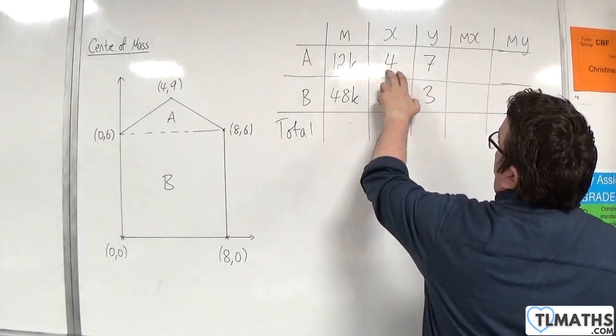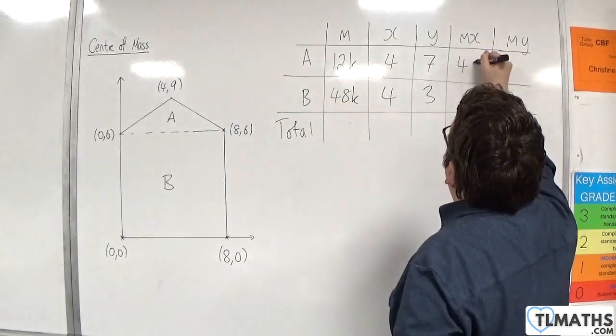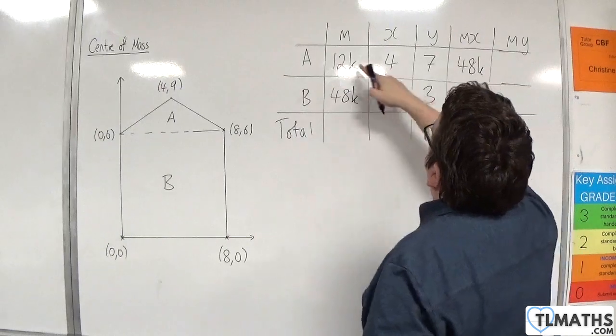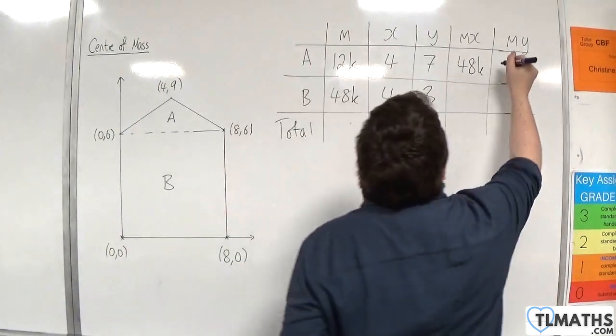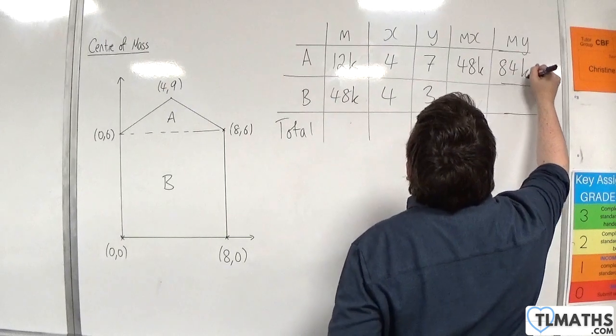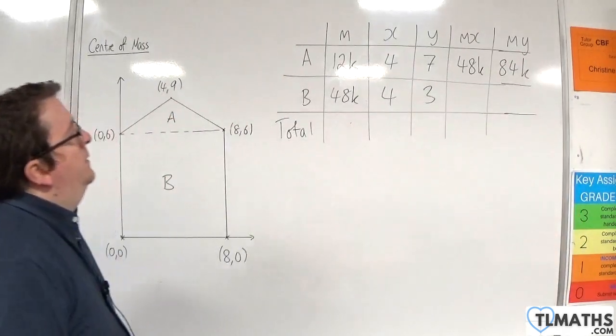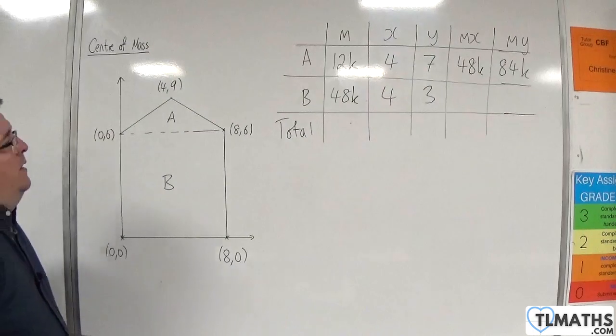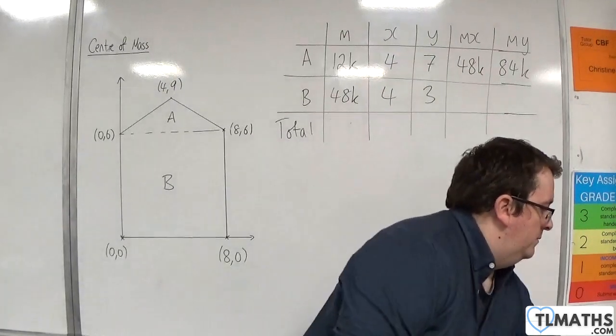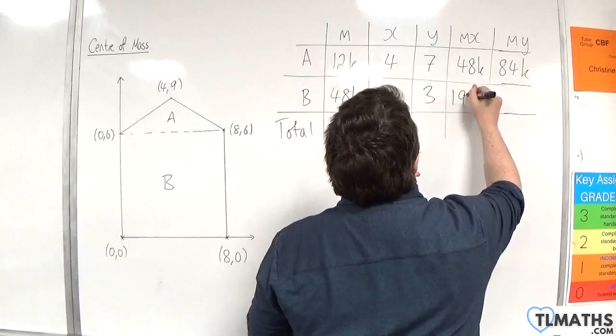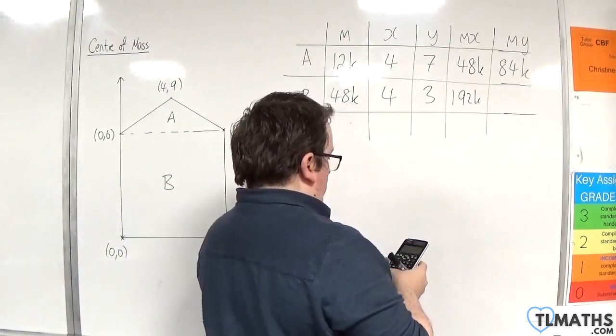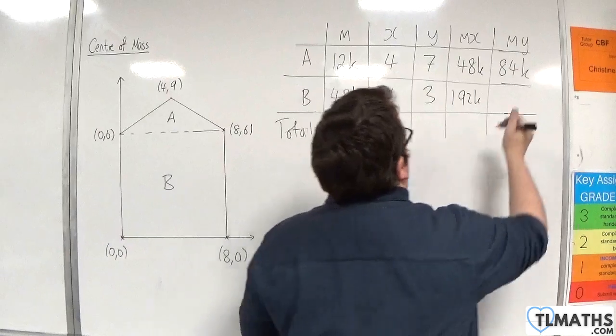We've got 12k times 4 is going to be 48k. 12 lots of 7 is 84, so that's 84k. Then, we've got 48 times 4, so 192k. And then, 3 lots of 48, so 144k.